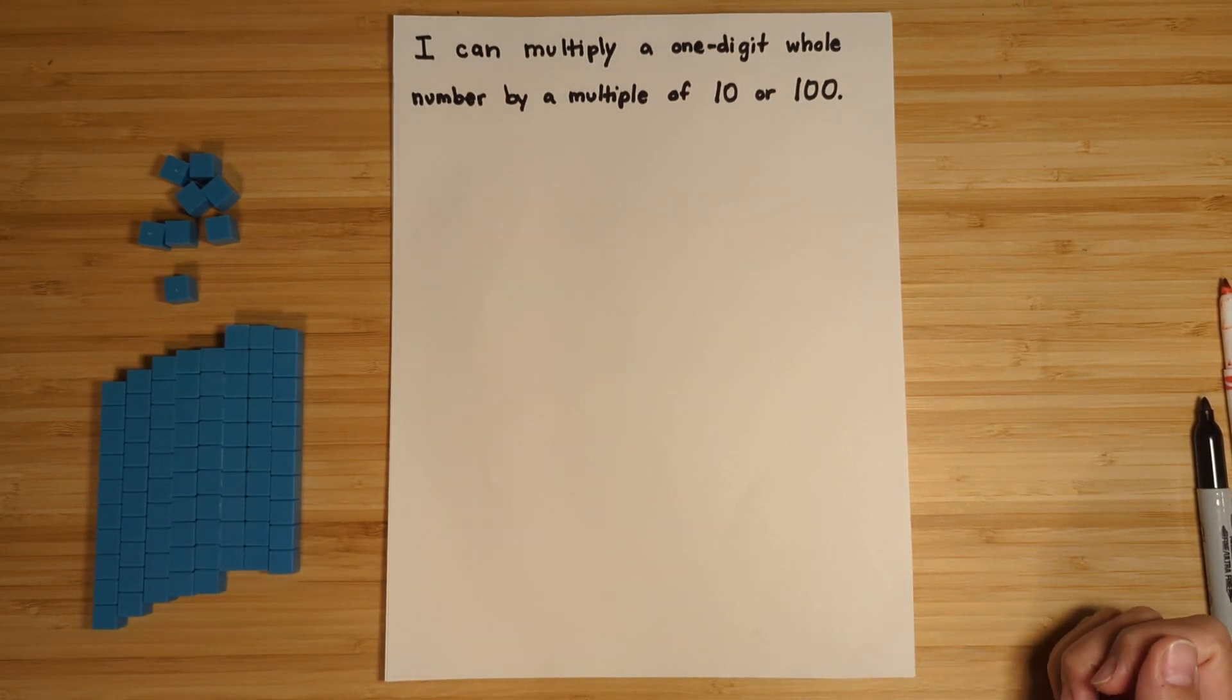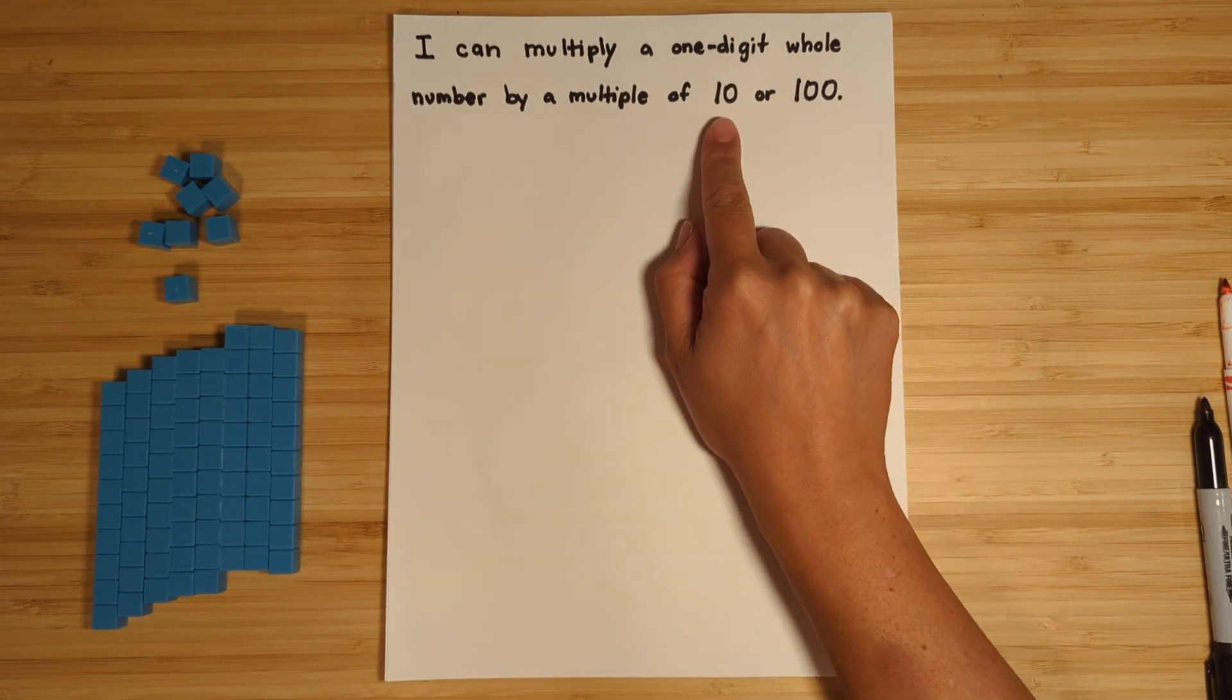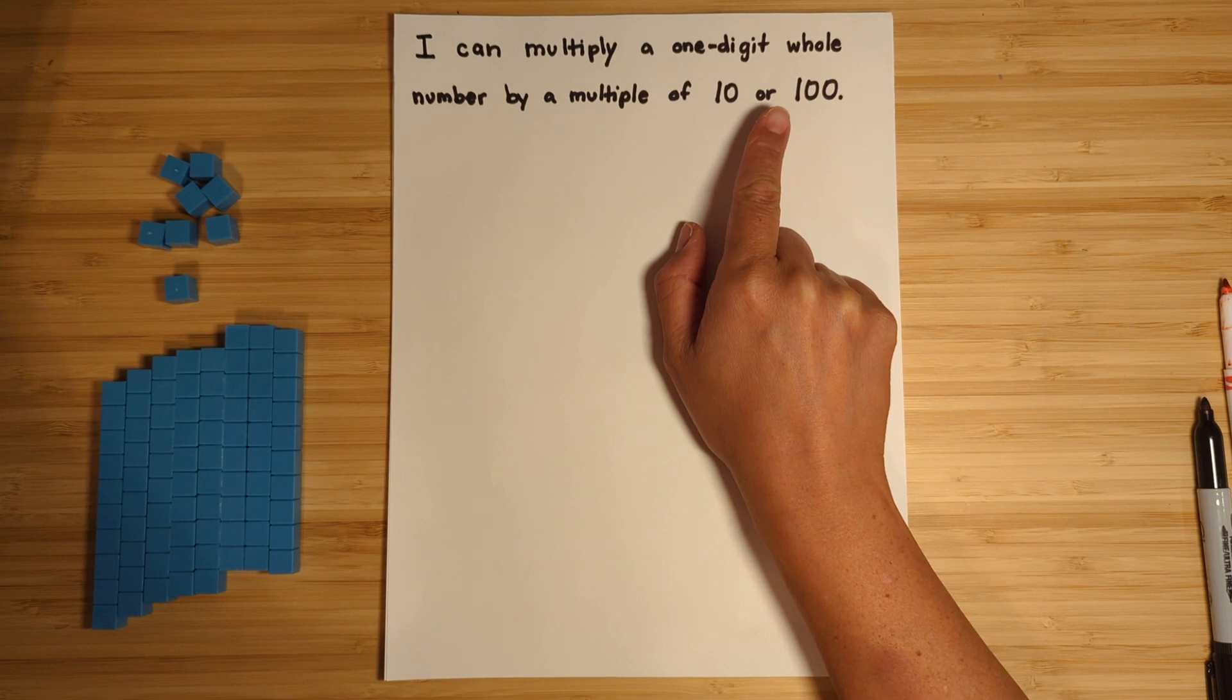All right, the I can statement for today is I can multiply a one-digit whole number by a multiple of 10 or 100. That's a multiple of 10 up to 90, and for the 100 is up to 900.